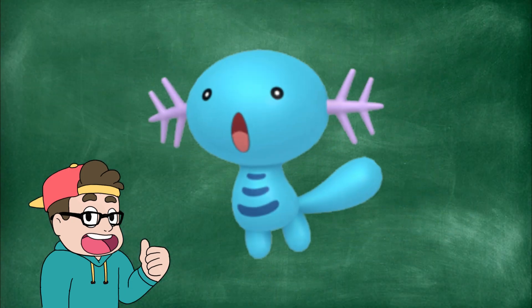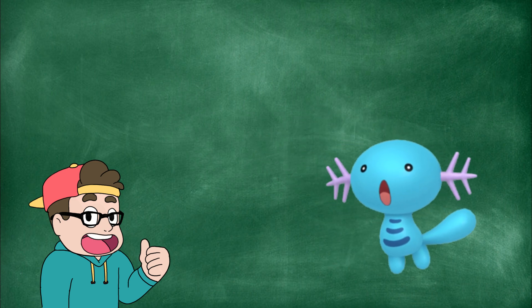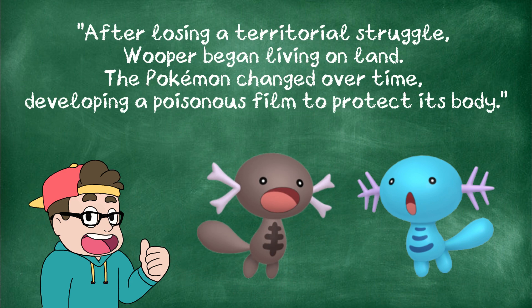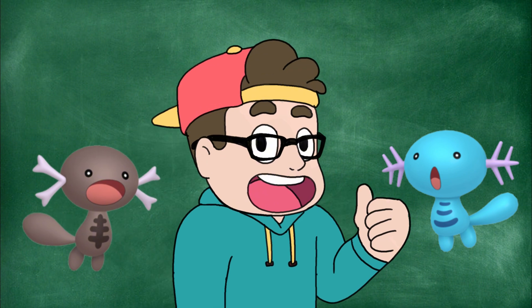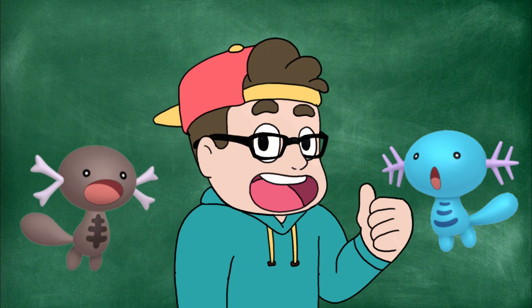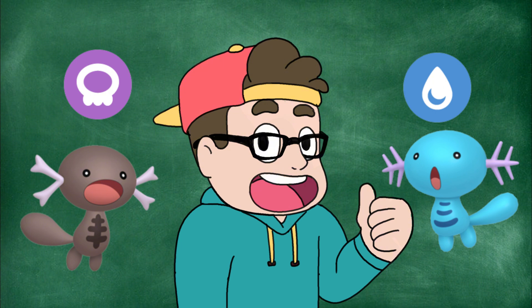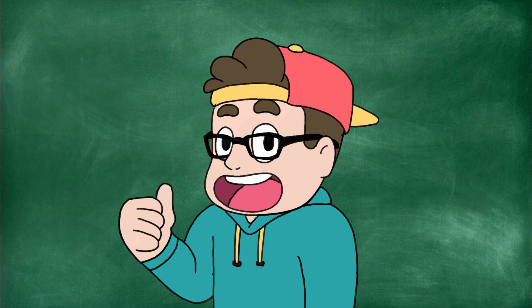I'm going to give you one last example: Wooper. Let's look once again at the flavor text from Pokémon entries. In Violet, Johtoian Wooper reads: "When it walks around on land, it coats its body with a slimy, poisonous film." And the Scarlet entry for Paldean Wooper reads: "After losing a territorial struggle, Wooper began living on land. The Pokémon changed over time, developing a poisonous film to protect its body." So from that, we learn that even though they both have this poisonous film, Johtoian Wooper only really gets this when it's on land — it's still amphibious, so this film is likely a way to contain moisture in its skin, as well as a defense mechanism. Whereas Paldean Wooper evolved to cover itself with this mucus all the time, so it no longer needed to return to the water, losing its water typing and gaining poison. Once again, adapting to survive and becoming a new species.